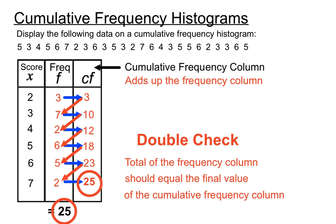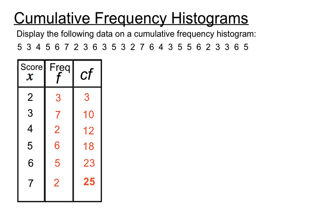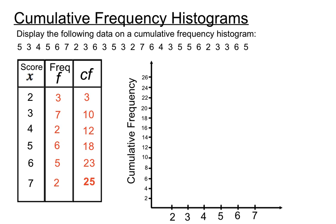So we have a cumulative frequency column now that we've created. Now let's just graph that into a histogram. We'll put the scores of 2 through 7 across the bottom. Now we'll look at the values of the cumulative frequency column because that's what we're going to be graphing. It goes from 3 up to 25, so we want that cumulative frequency vertical axis to go up at least to 25.